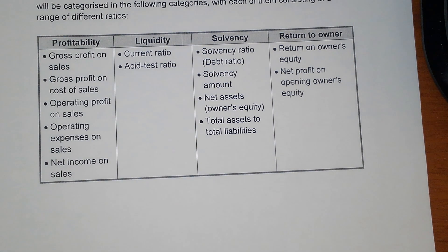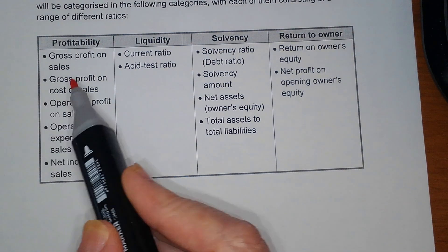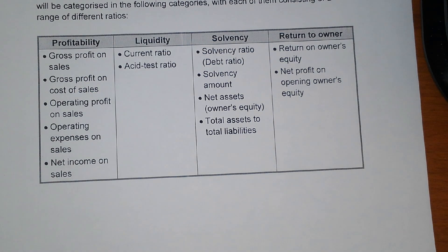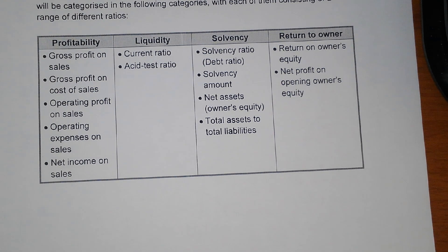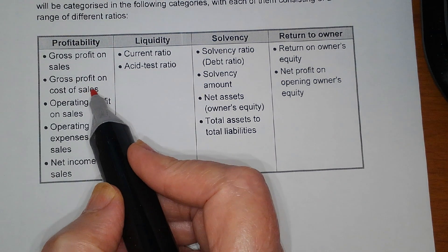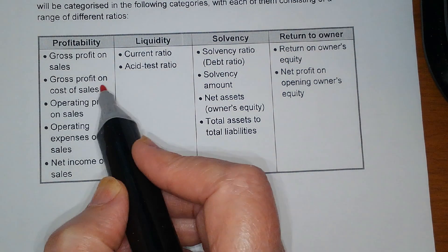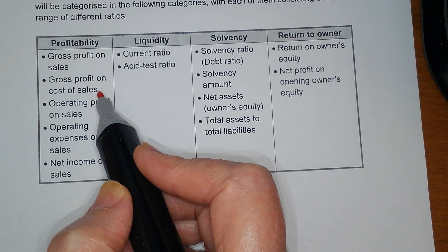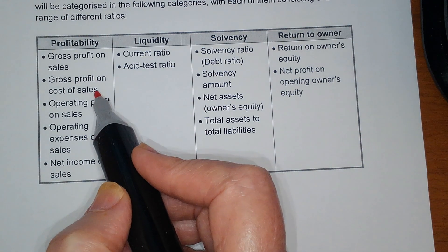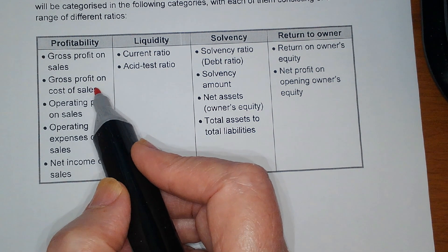We put the gross profit on the sales to see what percentage of total sales is actually used to buy or provide the goods — the cost price of the goods. We can also calculate the gross profit on cost of sales: gross profit divided by cost of sales times one hundred. If we had a profit of 75% on cost price, we go to the financial statements and check whether the actual profit made is still 75%, and if not, it tells us something happened to reduce the profit margin and we must investigate.